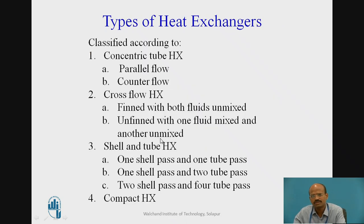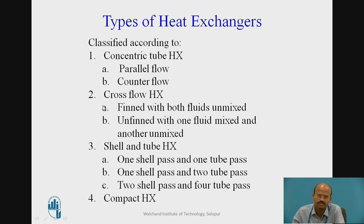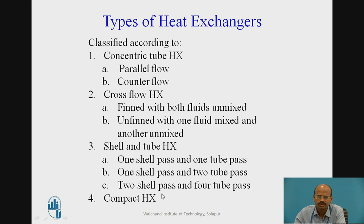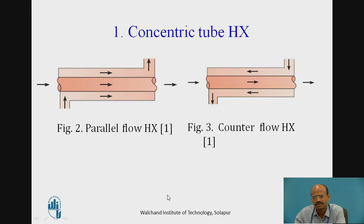The classification of heat exchangers includes four types. First is the concentric tube type, sub-classified as parallel flow and counter flow. Second is cross flow, with finned with both fluids unmixed, and unfinned with one fluid mixed and another unmixed. Third is the shell and tube type, including one shell one tube pass, one shell two tube passes, and two shell four tube passes. Fourth is the compact heat exchanger.